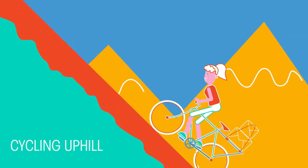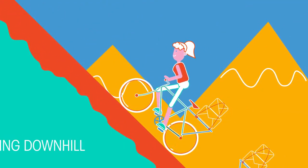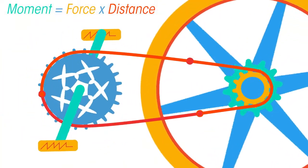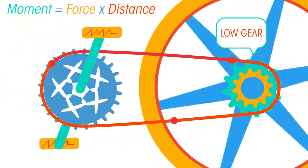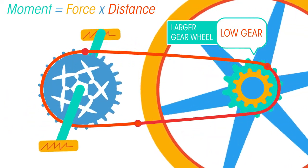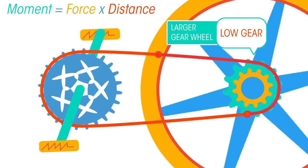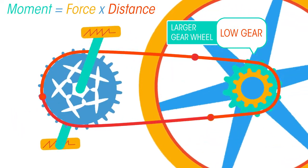This is helpful when cycling or driving up a hill, compared with going downhill and quickly. To cycle uphill, you select a lower gear, which is a larger gear wheel. Therefore, your force exerted on this gear gives a bigger moment, helping you power uphill.